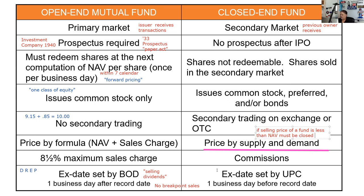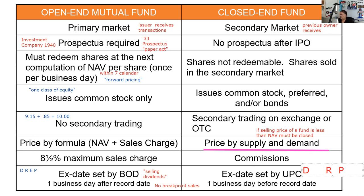Another testable distinction: if a fund has a price you would pay that is more than eight and a half percent above NAV, that too must be a closed-end fund. And remember, in a secondary trading scenario, the ex-date — the first date on which it no longer trades with the dividend attached — would be one day prior to the record date.